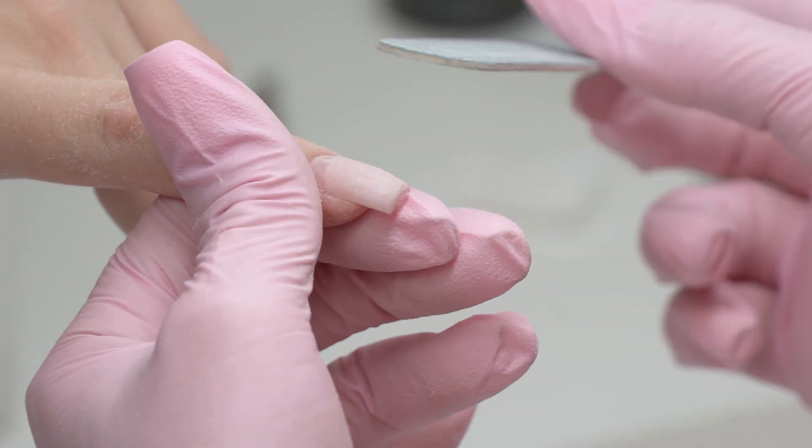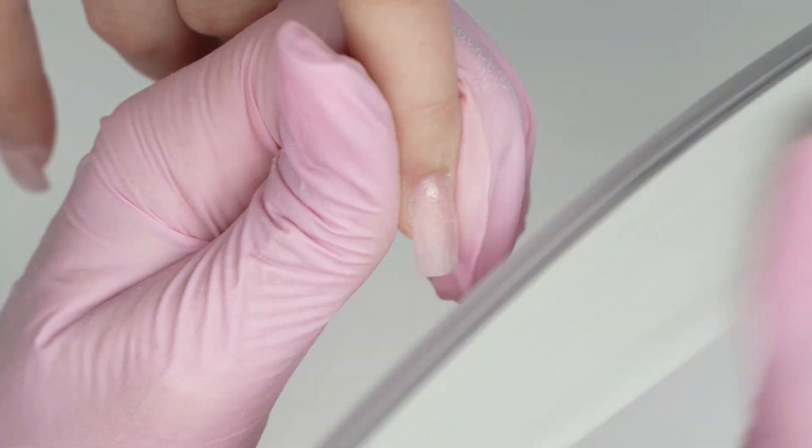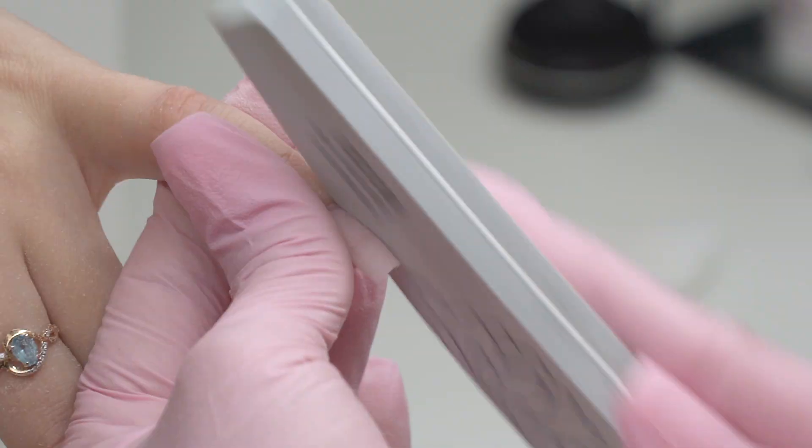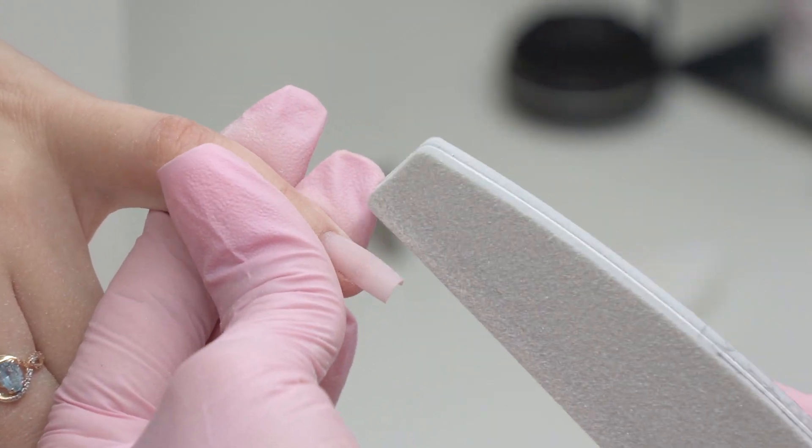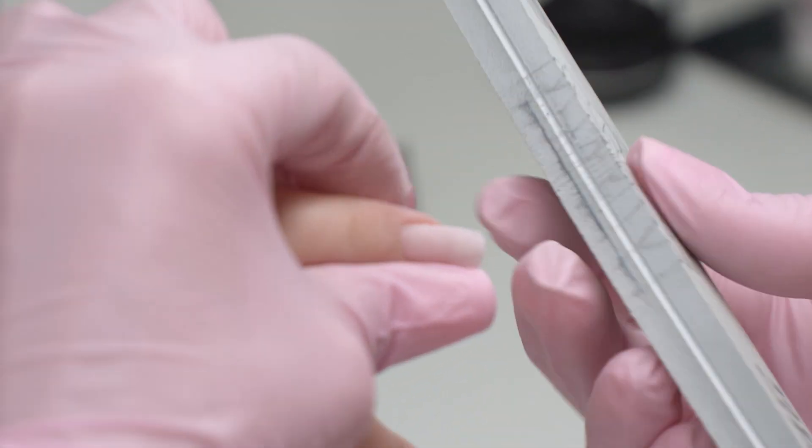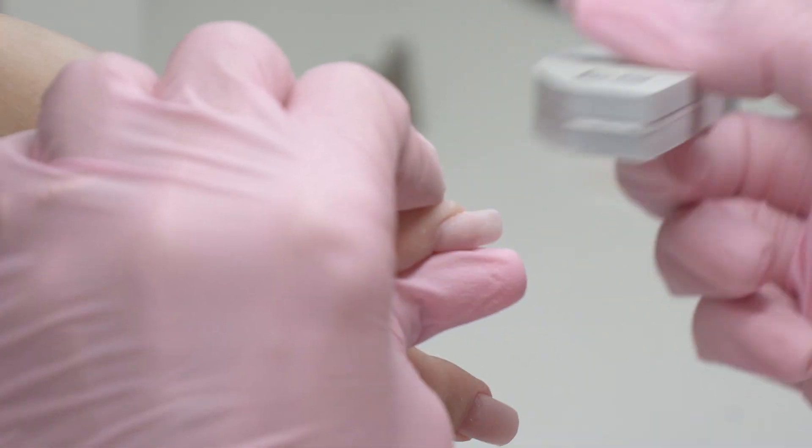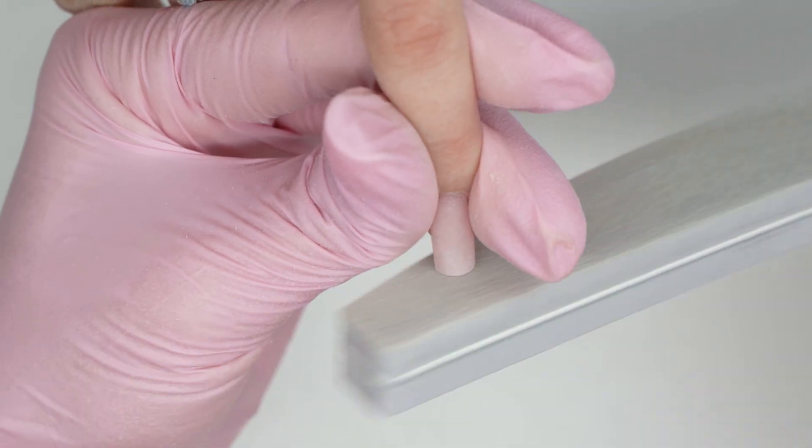And here's one more secret of perfect nails: defining a longitudinal curve. I try to file an even line from the apex to the free edge to make the nails even more defined. Now I smooth them out with a buffer.